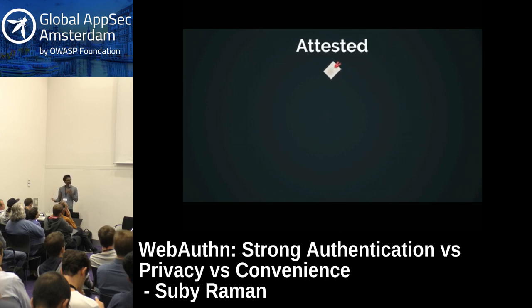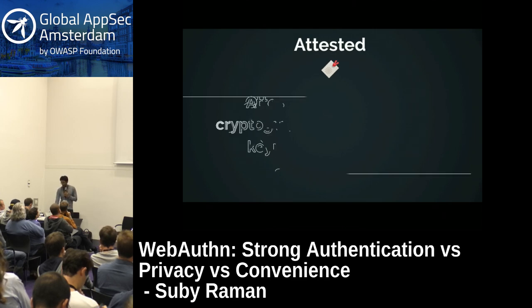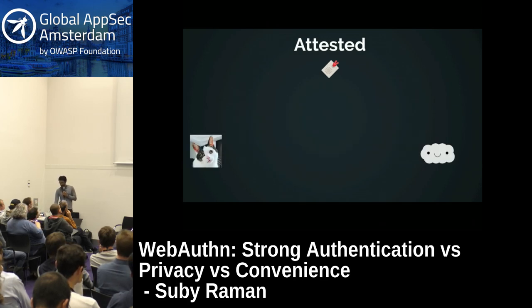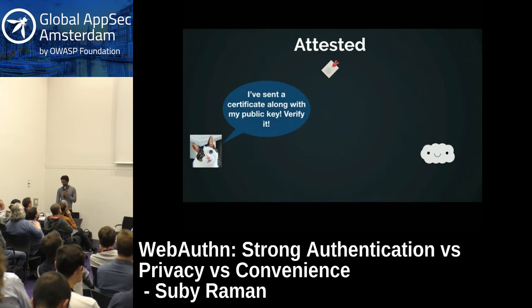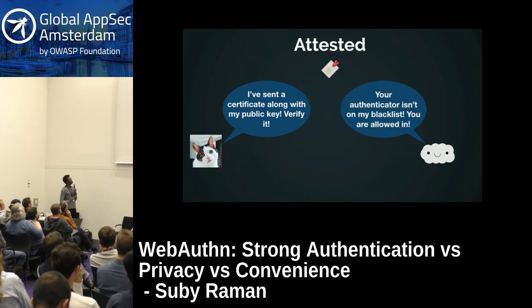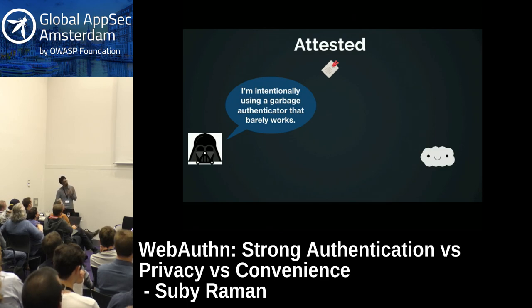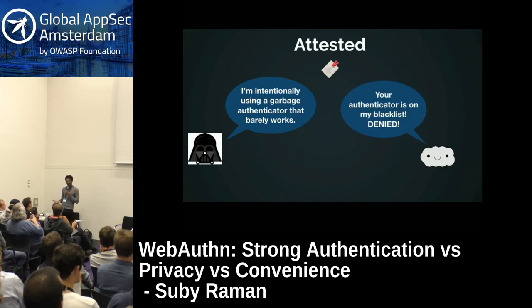Attestation is a big, complex topic we'll discuss later in the privacy conversation. At a high level, it's a way to cryptographically prove that a credential key pair came from a particular authenticator. During registration, when the key pair is being created, the authenticator provides a certificate that the server can verify. The relying party can use this certificate to determine that the key pair came from an authenticator they approve of — like Windows Hello or Touch ID — and can blacklist decisions against faulty authenticators.